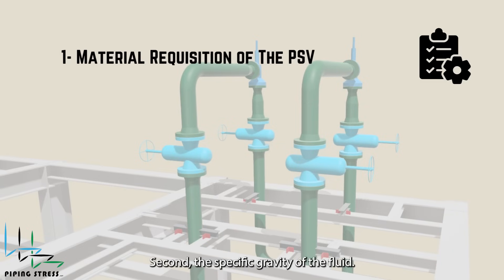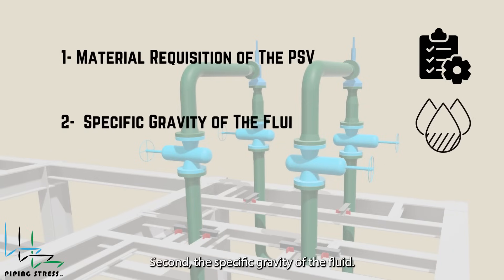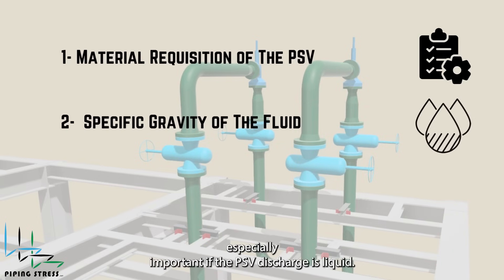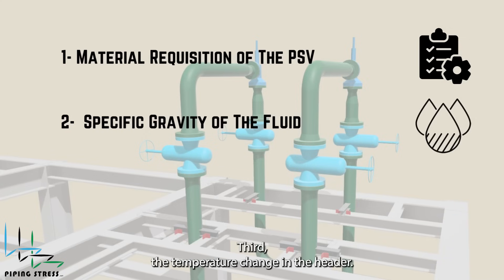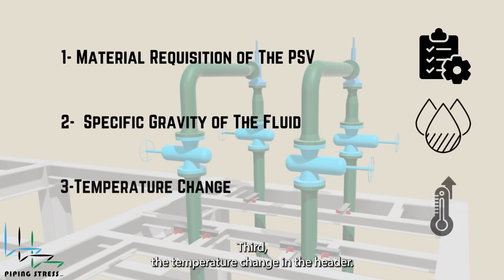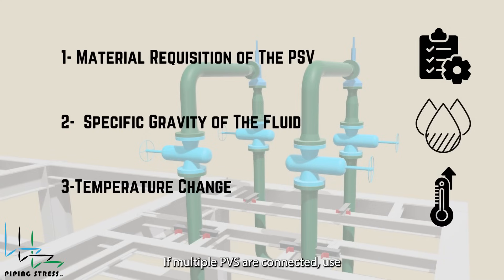Second, the specific gravity of the fluid — this is especially important if the PSV discharge is liquid. We also need the specific gravity of the connected header. Third, the temperature change in the header. If multiple PSVs are connected, use the average temperature for calculations.